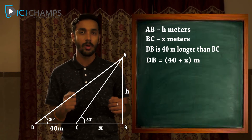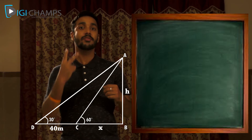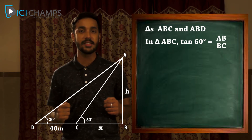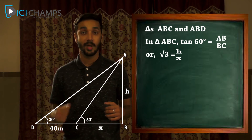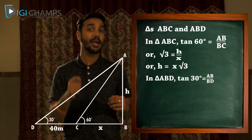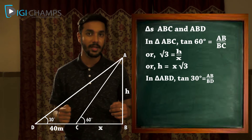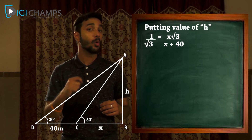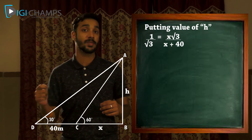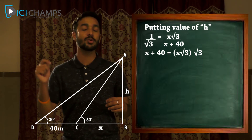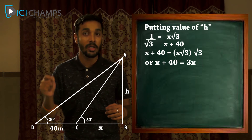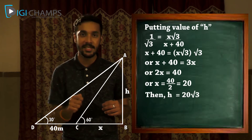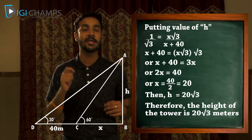We have two right triangles ABC and ABD. In right triangle ABC: tan 60° = AB/BC, so √3 = H/X, giving H = X√3. In right triangle ABD: tan 30° = AB/BD, so 1/√3 = H/(X+40). Substituting H = X√3: 1/√3 = X√3/(X+40), so X + 40 = 3X, giving 2X = 40, X = 20. Therefore H = 20√3 meters.